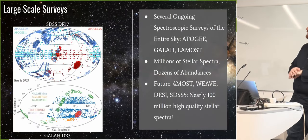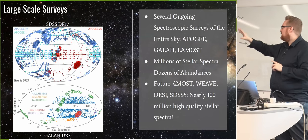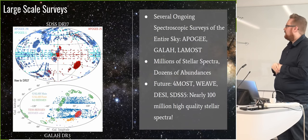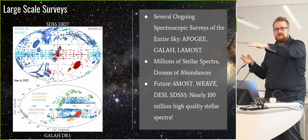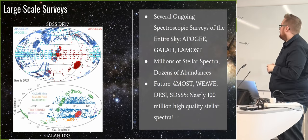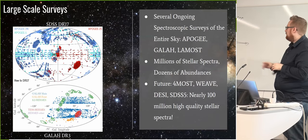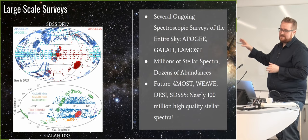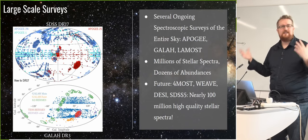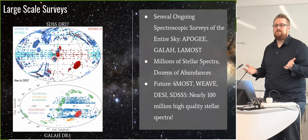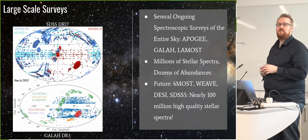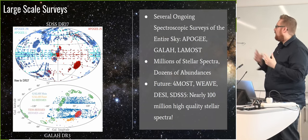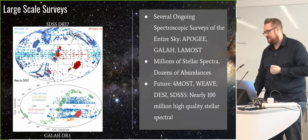Now I'll show you some maps from chemistry from large-scale surveys. There are surveys like Apogee, GALAH, and LAMOST. Apogee operates in the infrared, so it doesn't care about dust and can observe directly in the midplane of the disk, reaching stars much further away. These surveys are giving us millions of spectra. In the future, WEAVE, DESI, and SDSS-5 will deliver 100 million stellar spectra within 5 to 10 years — an order of magnitude increase every 5 to 10 years. The quality and volume of data for understanding the galaxy is increasing enormously.